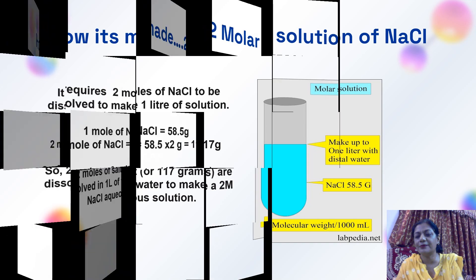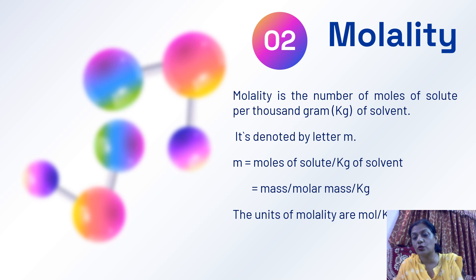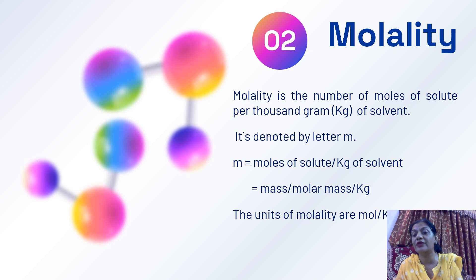Now let's come to the next topic: molality. Molality is the number of moles of solute per 1000 grams of solvent. Note: in molarity, we considered the solution in liters; in molality, we consider only the solvent in kilograms. It is denoted by small m. Small m equals moles of solute per kilogram of solvent. The units are mole per kilogram.